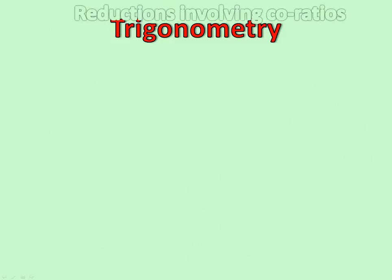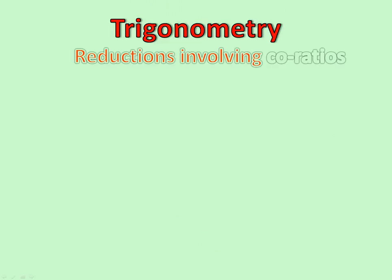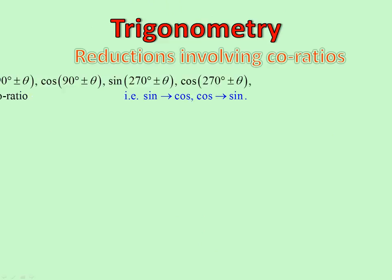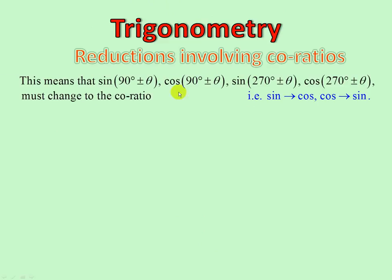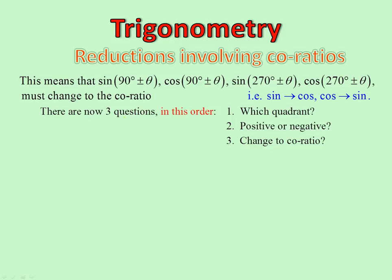And it goes in all other quadrants. The rule is: 90 plus or minus, and 270 plus or minus, must go to the co-ratio. But 180 plus or minus and 360 plus or minus do not. So now we have three questions: which quadrant, positive or negative, and does it change to the co-ratio?